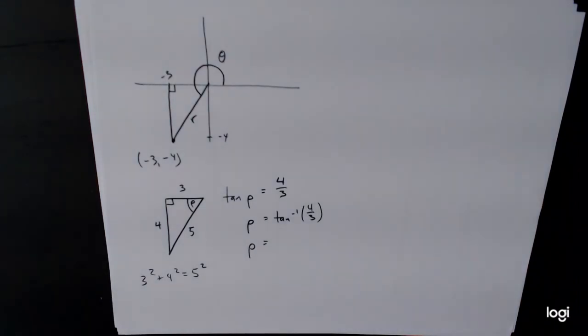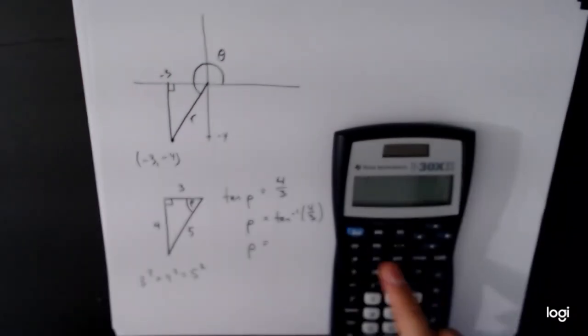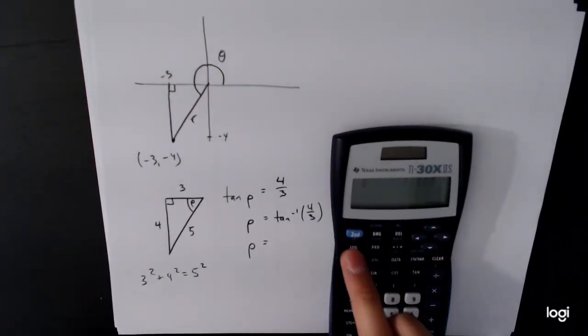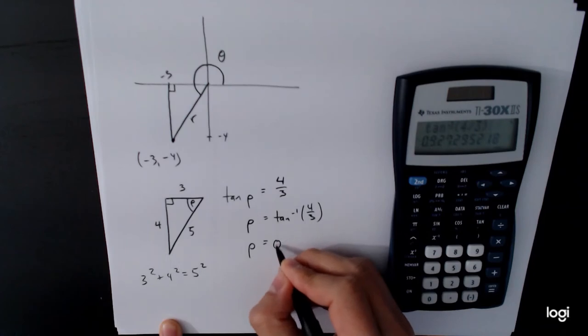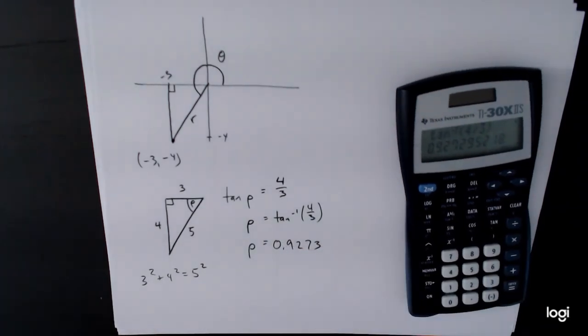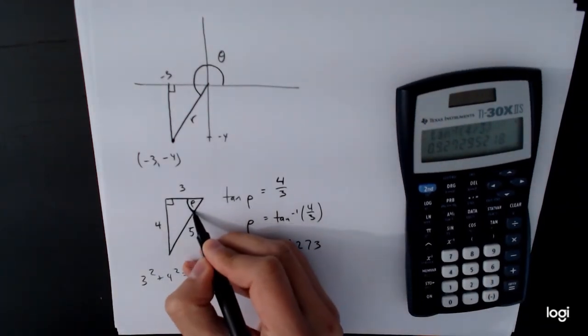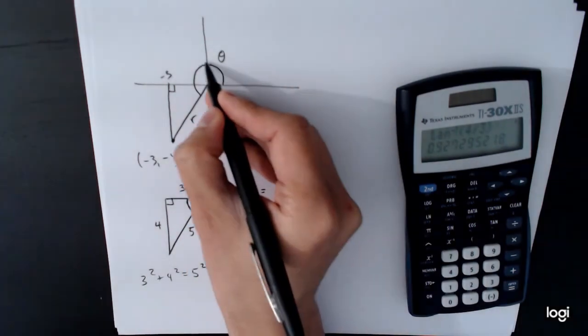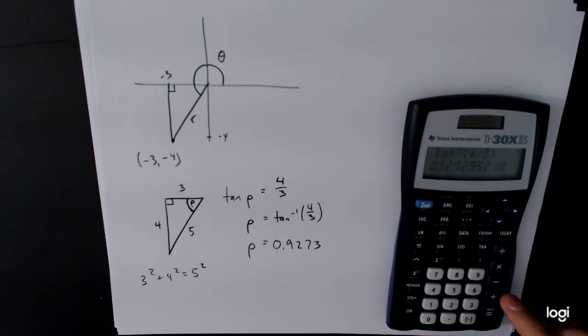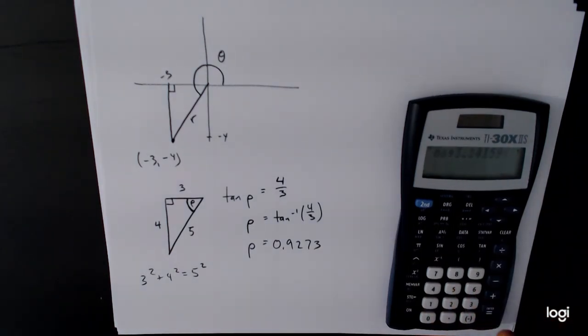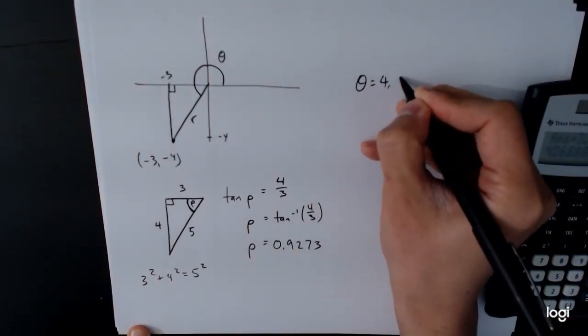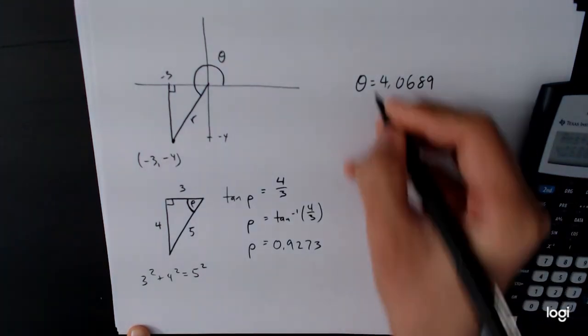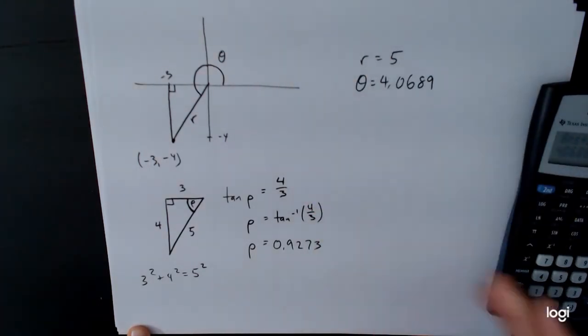This allows us to calculate rho, and rho is going to be the inverse tangent of four over three. And so our rho value is going to be, as I pull out my calculator, let's put myself in radians because that's what we've been using. So inverse tangent of four over three is equal to 0.9273. Now this angle rho right here only accounts for this. And so we have to remember that we want theta, so we have to add π to that. So this value plus 3.14159, so theta is equal to 4.0689 and our r is equal to five. And this gives us our value for r and theta.